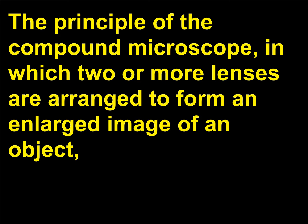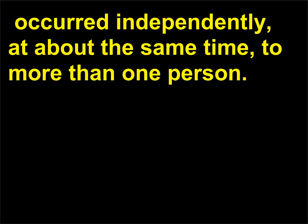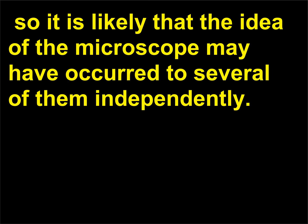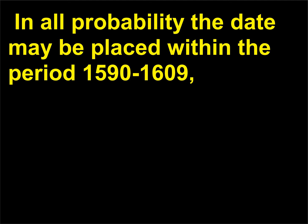The principle of the compound microscope, in which two or more lenses are arranged to form an enlarged image of an object, occurred independently, at about the same time, to more than one person. Certainly many opticians were active in the construction of telescopes at the end of the 16th century, especially in Holland, so it is likely that the idea of the microscope may have occurred to several of them independently. In all probability the date may be placed within the period 1590–1609.